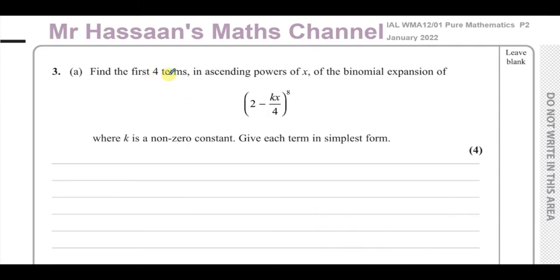We've got to find the first four terms in ascending powers of x of the binomial expansion of (2 minus kx) over 4, to the power of 8, where k is a non-zero constant. Give each term in simplest form.